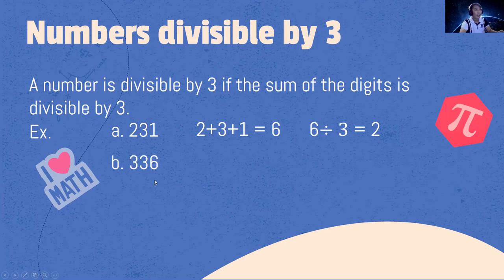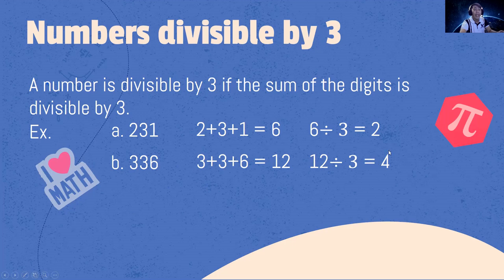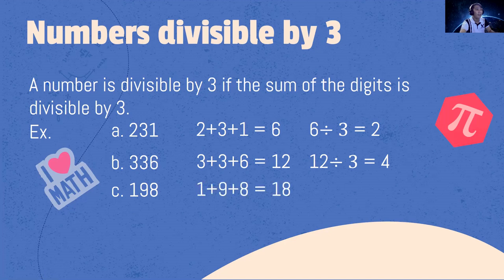Another example: 336. Let's add the digits — 3 plus 3 plus 6 is 12, and 12 divided by 3 is 4. Therefore, 336 is divisible by 3. Another one: 198. 1 plus 9 plus 8 is 18, and 18 divided by 3 is 6. Therefore, 198 is divisible by 3 because the sum of the digits is divisible by 3.